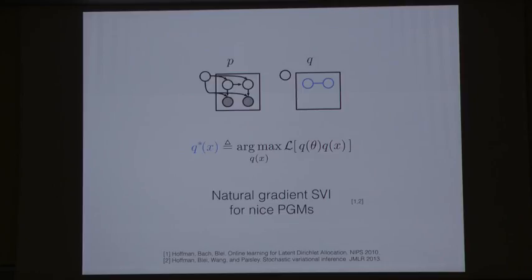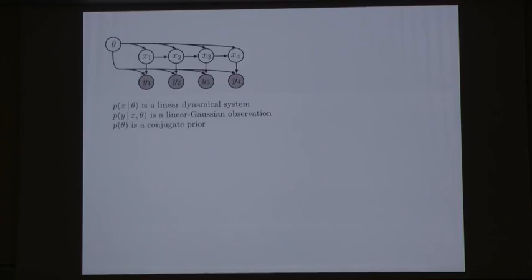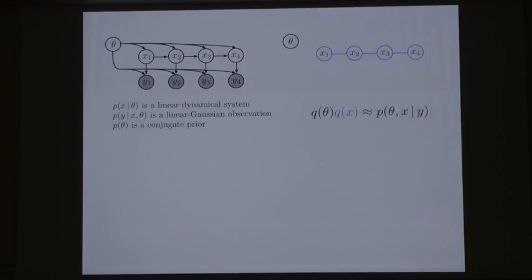I'll start by talking about natural gradient SVI for nice probabilistic graphical models. By 'nice,' I mean models that we build out of exponential family distributions with lots of conjugacy structure and lots of things we can exploit. To give you a concrete example, this is one such nice model: a linear Gaussian dynamical system. Think of the X's as linear Gaussian states over time, and the Y's as linear Gaussian observations.